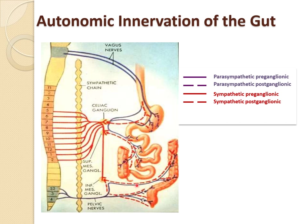For the sympathetic supply, fibers arise from the eighth thoracic to the second lumbar spinal segment, pass through the lateral sympathetic chain to continue as splanchnic nerves. The pre-ganglionic fibers relay in celiac and mesenteric autonomic ganglia, and post-ganglionic fibers run along blood vessels to terminate mainly on neurons of the enteric nervous system. The sympathetic innervates all portions of the GIT, rather than being more extensively supplied near the oral cavity and anus as is true for parasympathetics.